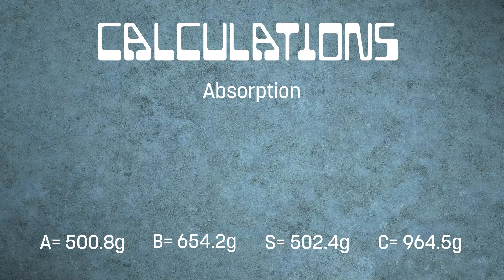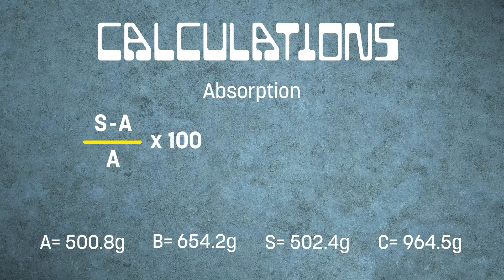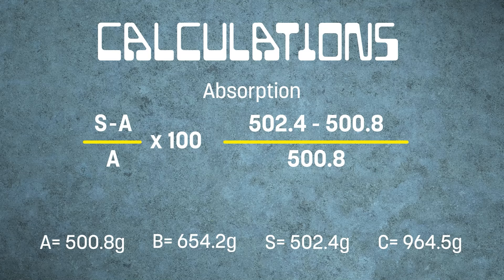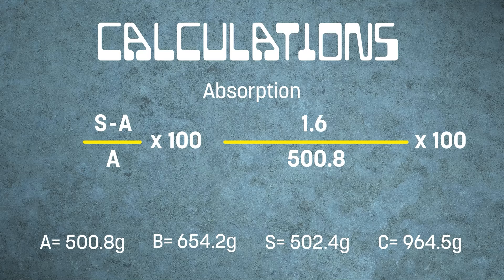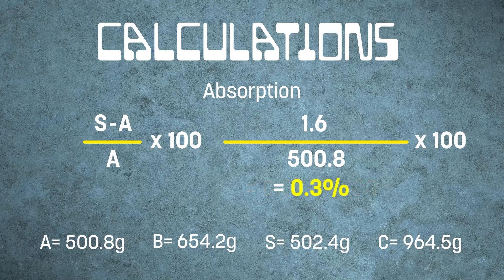Now you can calculate for absorption. The calculation for absorption is S minus A, divided by A, times 100. Plugging in the numbers: 502.4 grams minus 500.8 grams divided by 500.8 grams times 100. This leaves 1.6 grams divided by 500.8 grams, which equals 0.003. Multiply 0.003 by 100 and you will get an absorption of 0.3%.